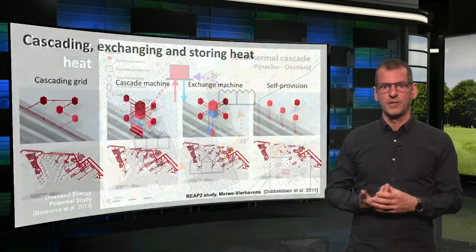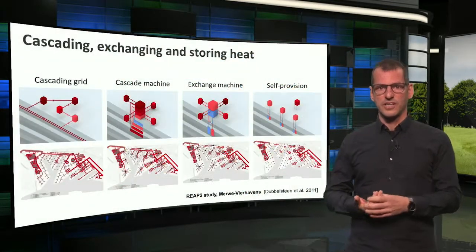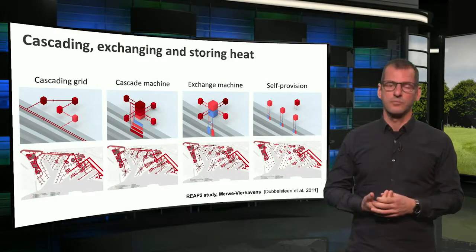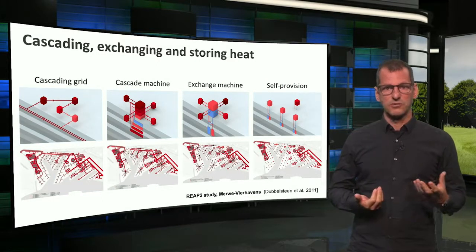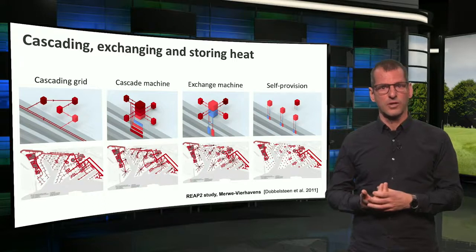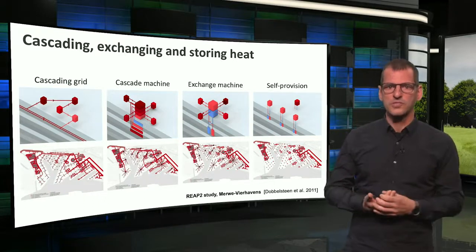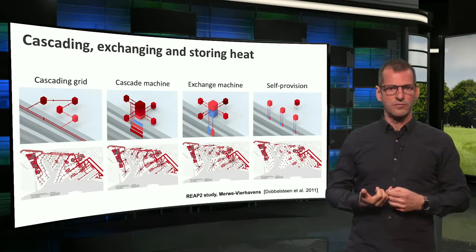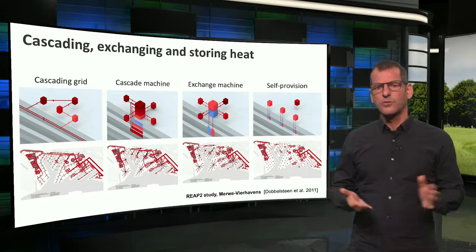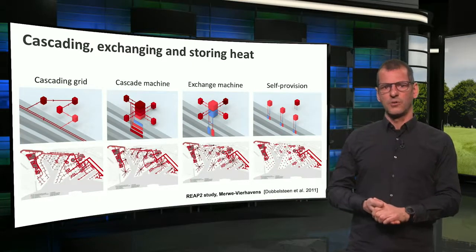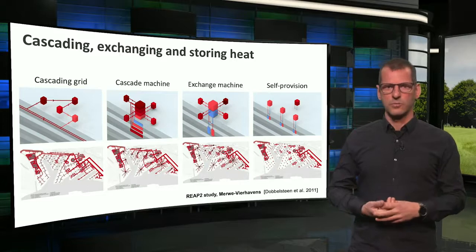Over time, different types of exchanging, cascading, storing and heat have been studied. This is an overview of technical ideas for a city harbour in Rotterdam, where an optimal system for heat and cold could be elaborated in various ways. I won't go into them — it's just to show that we can become much smarter with energy on the urban scale.